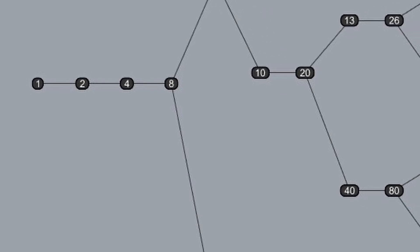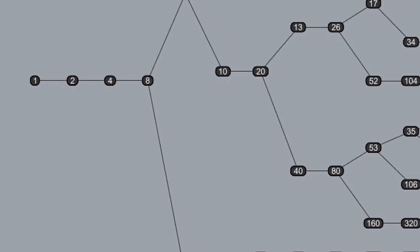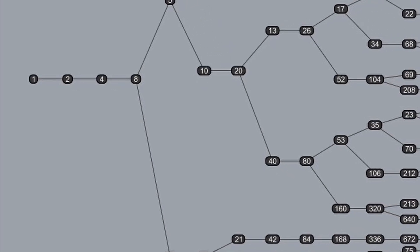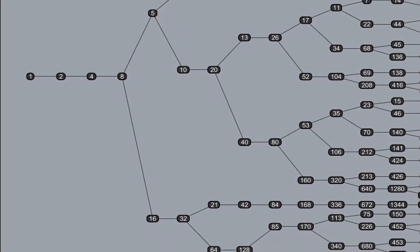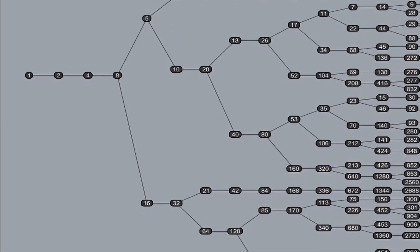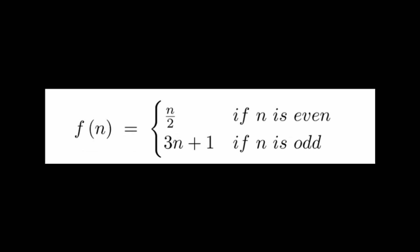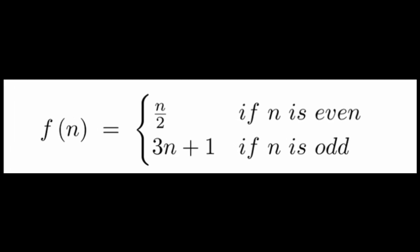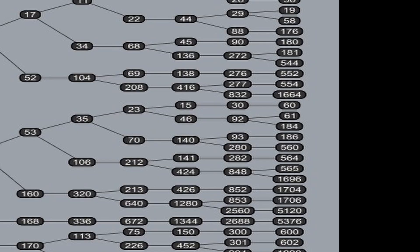There is a problem in mathematics that has gone unsolved for nearly a century. The funny thing about this problem is it's quite easy to understand, even for a middle schooler. The problem involves two separate rules: if the number is odd, you multiply it by 3 and add 1; if it's even, you divide it by 2, essentially getting rid of 2 as a prime factor. The question is, under iteration, does every single number eventually reduce to 1?